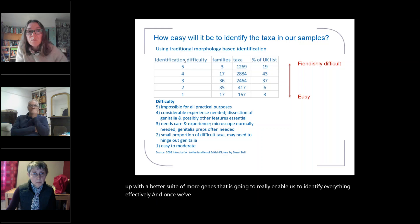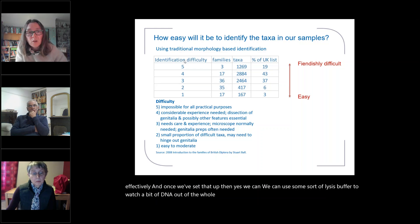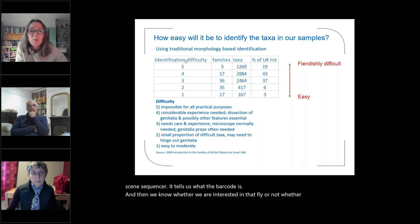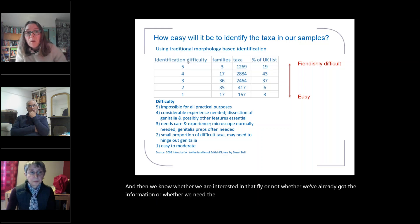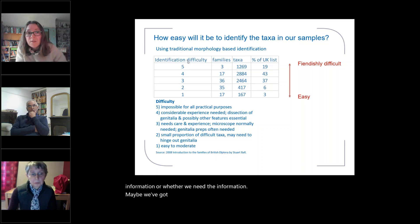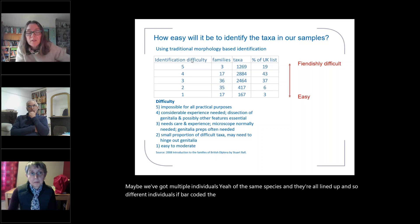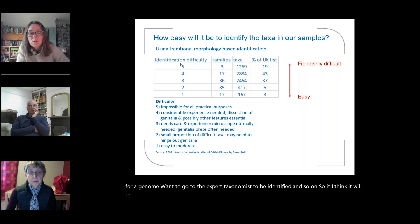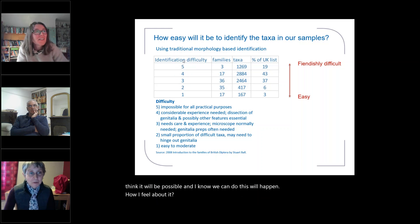Once we've set that up, we can use some sort of lysis buffer to wash a bit of DNA out of the whole fly. That DNA can go quickly onto the little on-scene sequencer, it tells us what the barcode is, and then we know whether we're interested in that fly — whether we've already got the information or whether we need it. Maybe we've got multiple individuals of the same species all lined up, and if we barcoded them all with our lysis buffer, we can choose one to go for a genome, one to go to the expert taxonomist to be identified, and so on. I think it will be possible. We can do this. This will happen. On that very optimistic note, we'll stop.